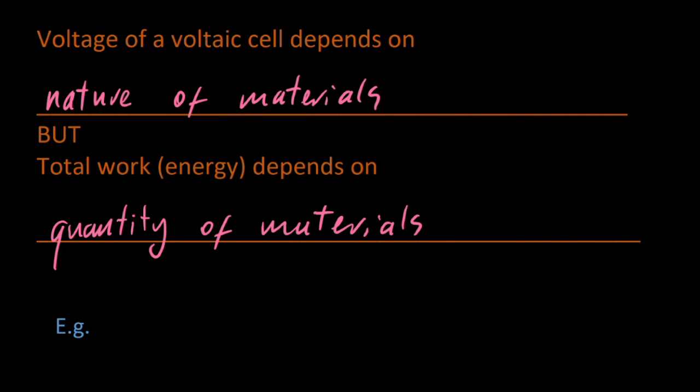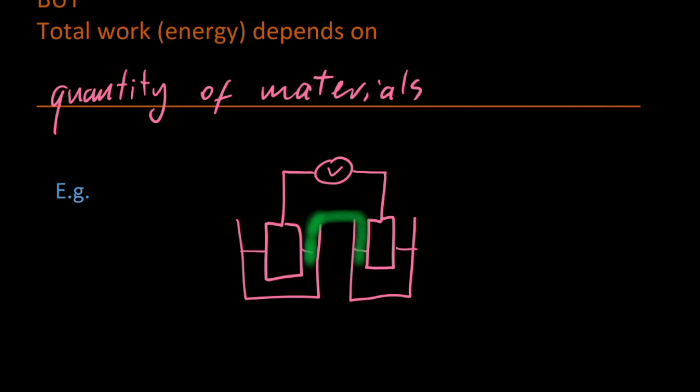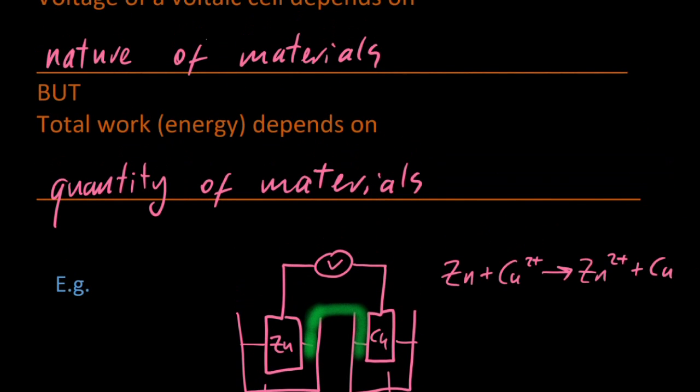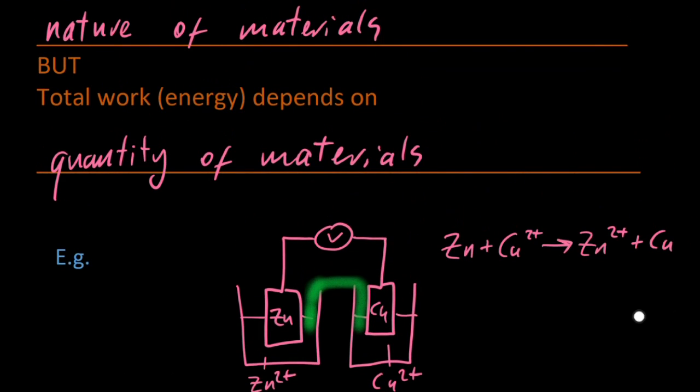Here's a regular Daniel cell—that's zinc and copper electrodes in a solution of their ions. The voltage depends on the nature; it's zinc and copper. You have to look that up on the electrochemical series and you can work out the voltage.